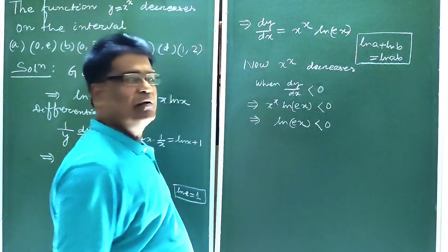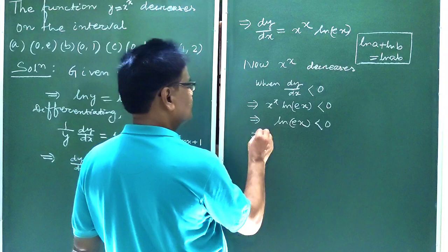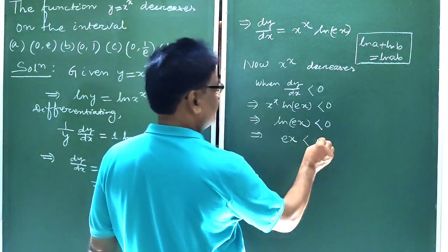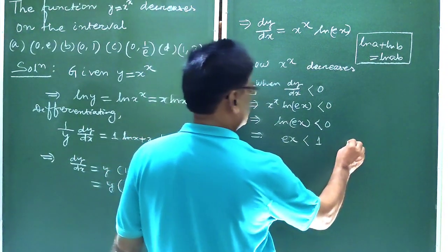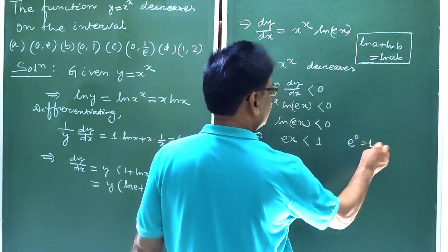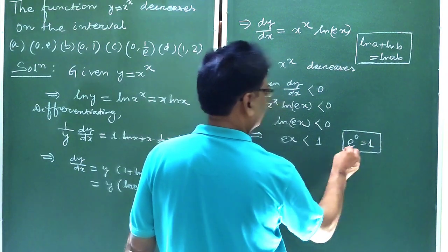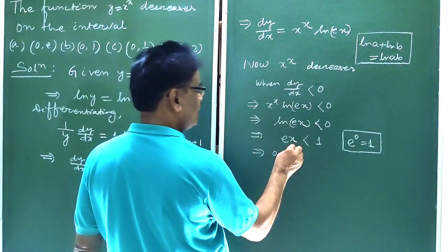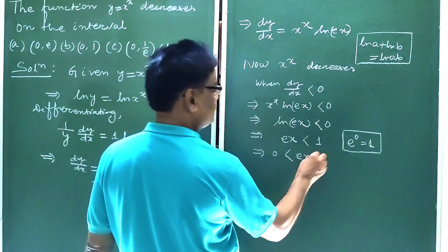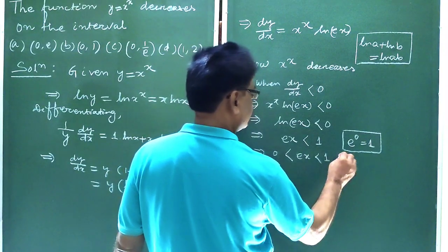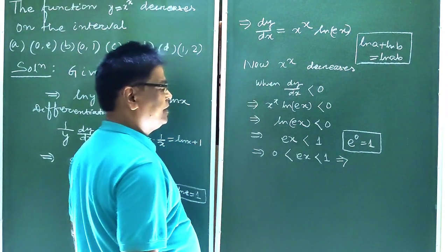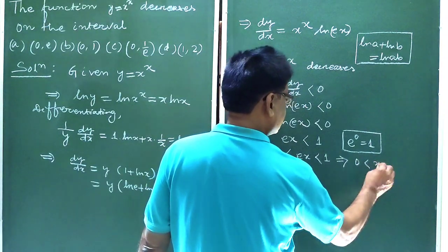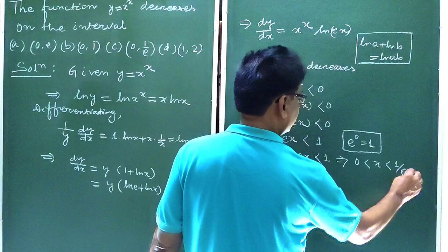Because x to the power x cannot be 0, this implies ln(ex) less than 0. This implies 0 less than ex less than 1. Dividing through by e, 0 less than x less than 1 by e.